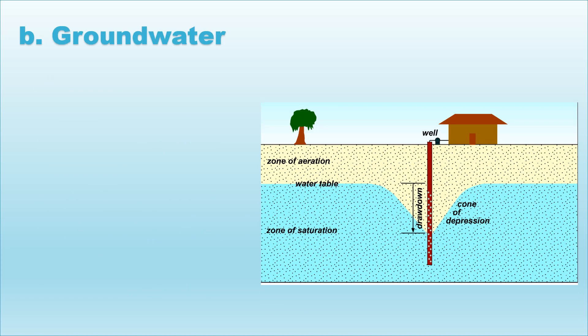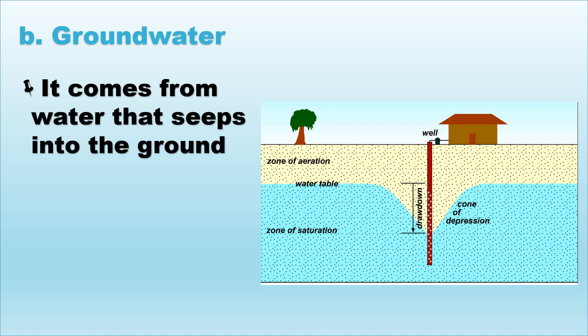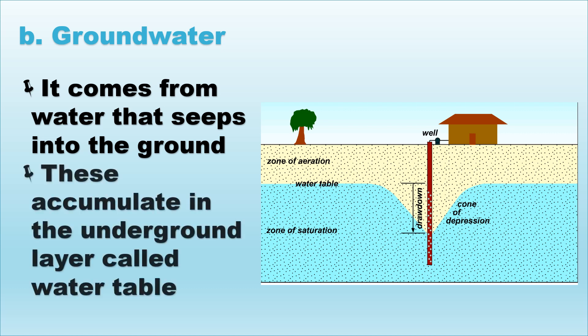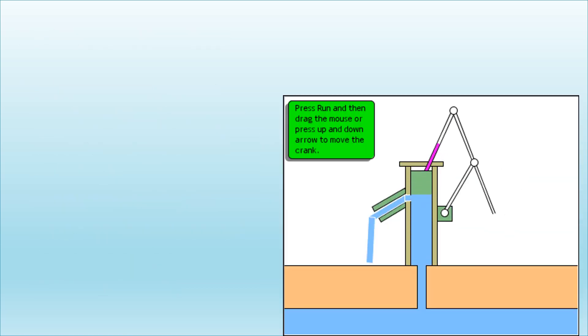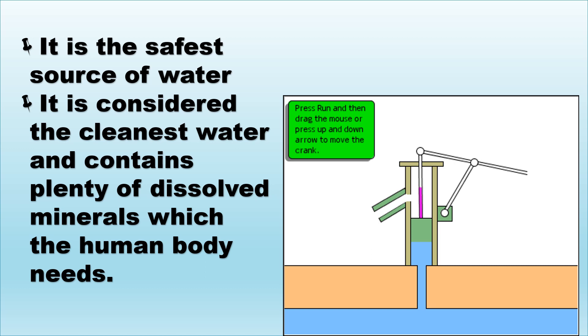Groundwater is also a fresh water. It comes from the water that seeps into the ground. These accumulate in the underground layer called the water table. Groundwater is the safest source of water. It is considered the cleanest water and contains plenty of dissolved minerals which the human body needs.